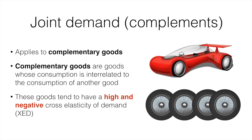Joint demand in this syllabus describes complements, which are goods that are generally consumed together. In this image we see a common pairing of cars and tires. The same could hold true for tennis balls and tennis rackets. They tend to have a negative cross elasticity of demand, and to understand why, you should consider the impact an increase in the price of cars will have on the demand for car tires.